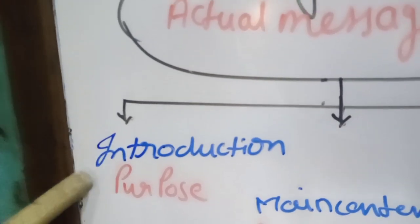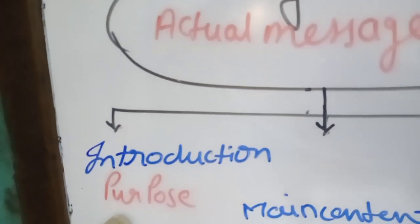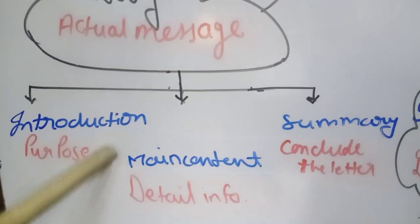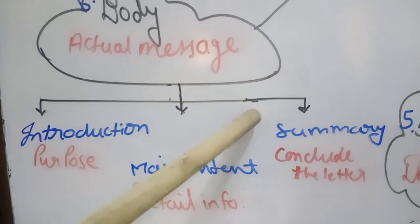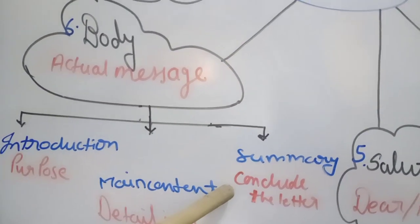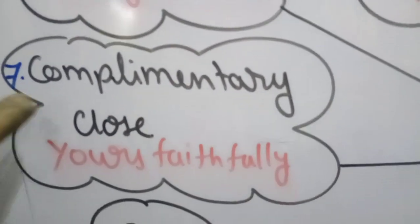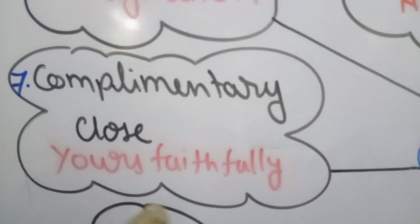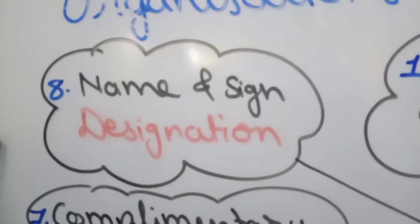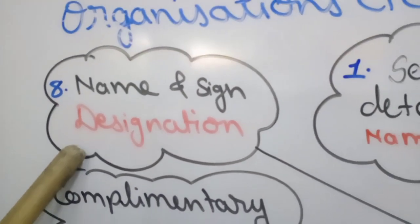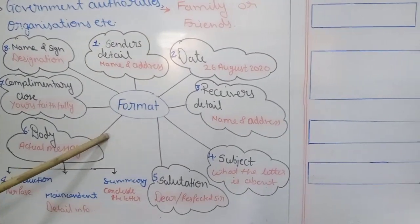The first paragraph is the introduction of the letter — we write an introduction of ourselves and the purpose of why we are writing. The second paragraph is the main content, where we write detailed information about our letter. And at the last we have to write 'Yours faithfully,' followed by the name and signature of the person writing the letter, and the designation if applicable.